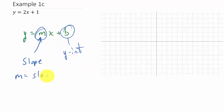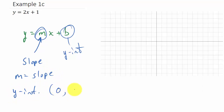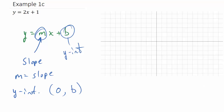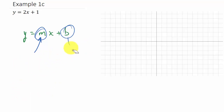The slope is m, and the y-intercept is in the form (0, b) — that's the coordinate for your y-intercept: zero, and then whatever that number is. What you'll do is plot this point, and then use the slope, which is rise over run.